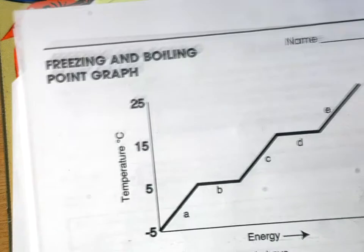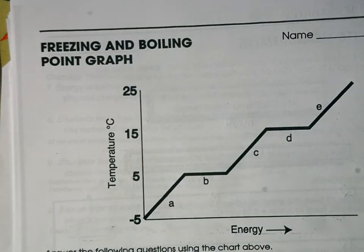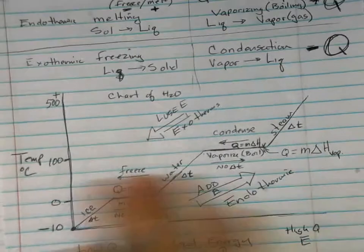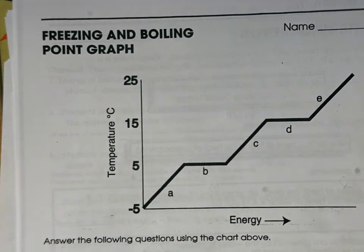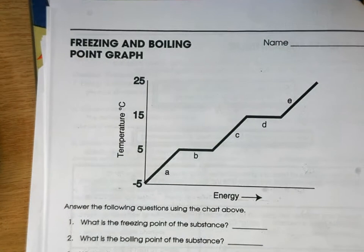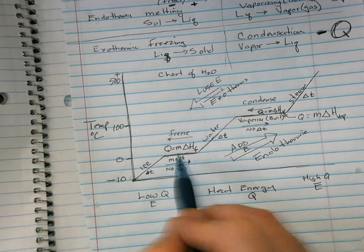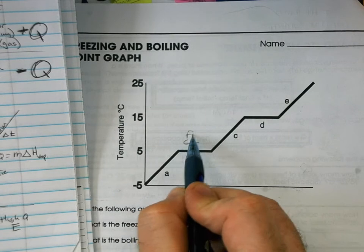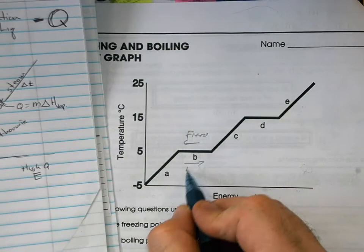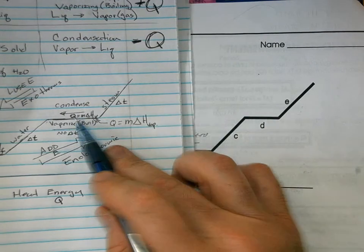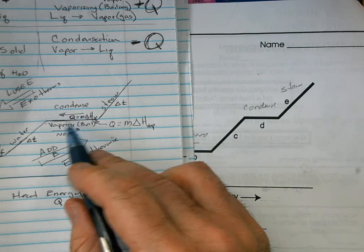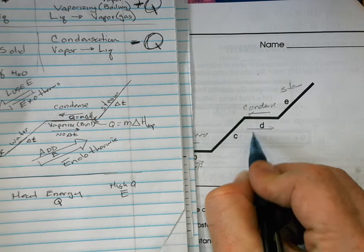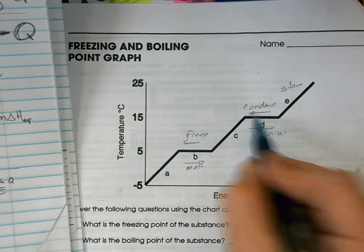Now let's go to the freezing point/boiling point graph. You need to be looking at your notes from class — the diagram we did for water, except this one is for a different material with different melting and freezing points. On the chart you have: melting and freezing happening at one flat region, condensing and vaporizing at another. Melting goes one way, condensing the other, and vaporizing goes upward.